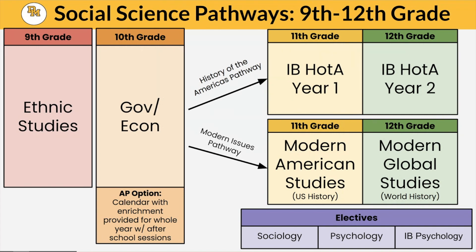As students become upperclassmen, they have two choices within social science depending on their interests. If they're interested in the history of the Americas — not just the United States but all of North, Central, and South America — they can take IB History of the Americas, or IB HOTA. This is a two-year IB course covering topics like rights and protests comparing the US and South Africa, the Cold War, imperialism in Latin America, and the Great Depression.